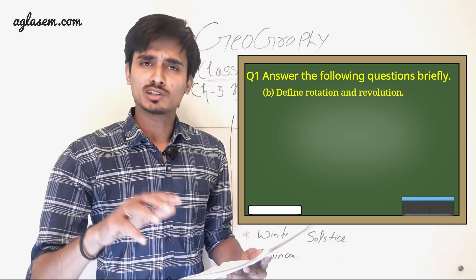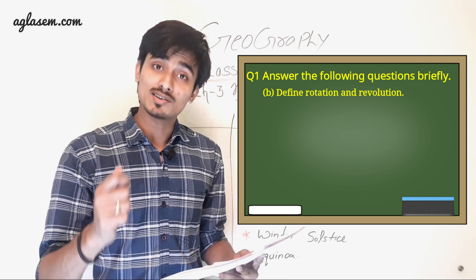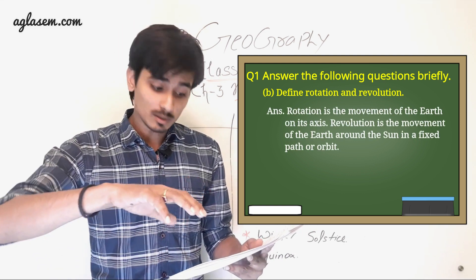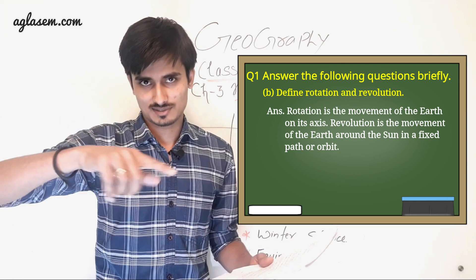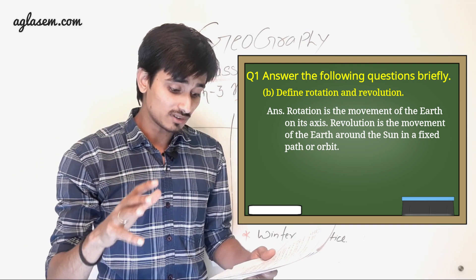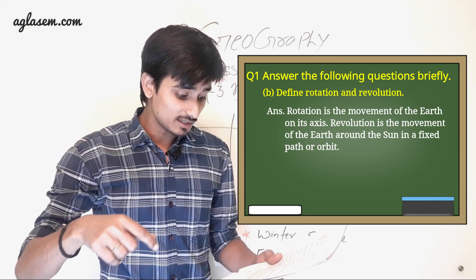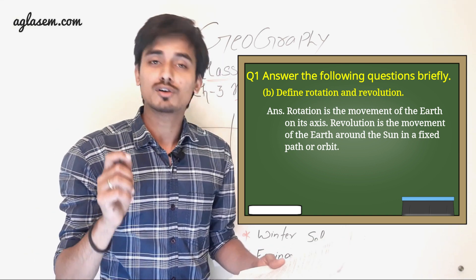B. Define rotation and revolution. So answer is: Rotation is the movement of the Earth around the Sun in a fixed path or orbit.